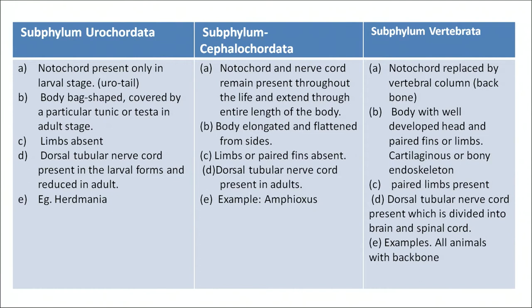The third subphylum is Vertebrata. Notochord is replaced by the vertebral column — the backbone. The body has well-developed heads and paired fins or limbs. It has a cartilaginous or bony endoskeleton. Paired limbs are present. The dorsal tubular nerve chord is present, divided into the brain and spinal cord. Examples are all animals with a backbone.